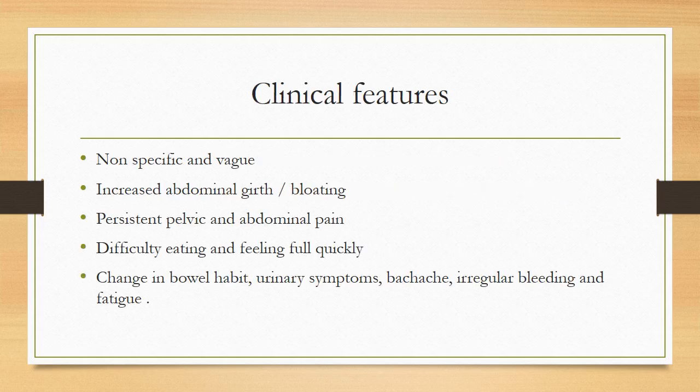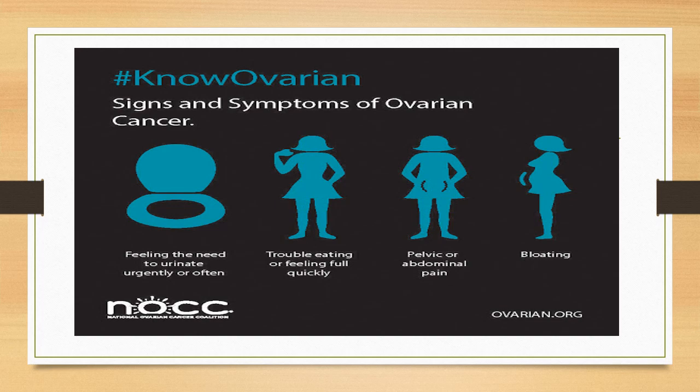Clinical features of ovarian cancer are non-specific and vague. There is increased abdominal girth and bloating, persistent pelvic and abdominal pain, difficulty in eating and feeling full quickly, change in bowel habits, urinary symptoms, backache, irregular bleeding, and fatigue. Most symptoms are non-specific and mostly related to the GI tract.